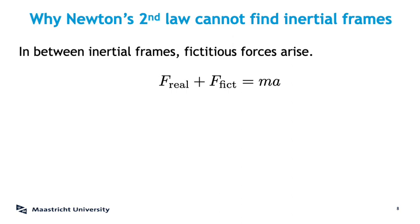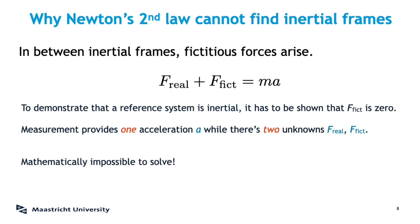But the left-hand side has two unknowns: the real forces F real and the fictitious forces F fictitious. That's a mathematical impossibility because we have one equation with two unknowns in it. For example, a plus b equals 10 cannot tell you how much of that 10 is hidden in a and how much is in b, let alone to find out whether a or b is zero. So we cannot use the second law to find out whether the fictitious force is zero and therefore whether we are in an inertial frame or not. Newton's second law fails.